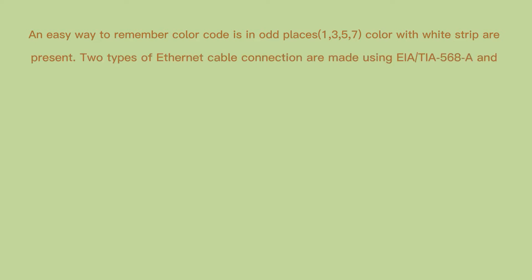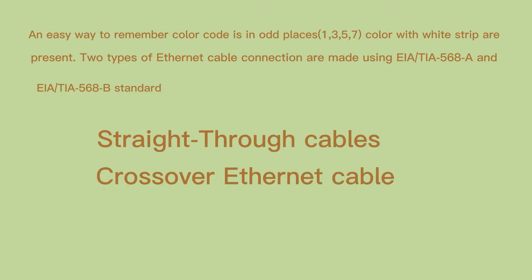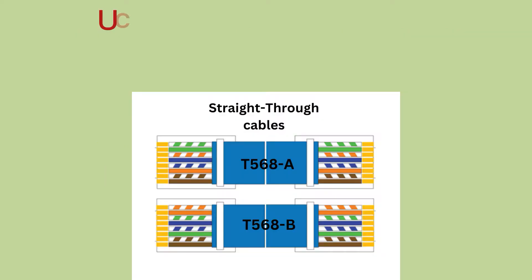Two types of Ethernet cable connections are made using EIA/TIA 568A and EIA/TIA 568B standards: straight-through cables and crossover Ethernet cables.